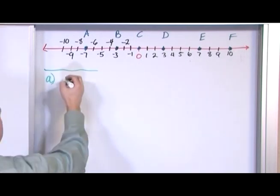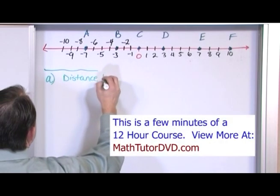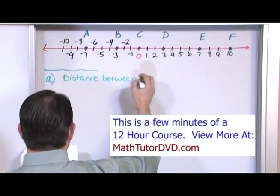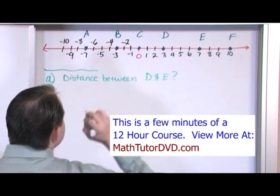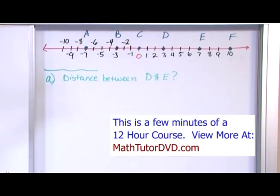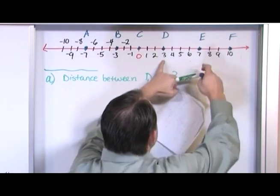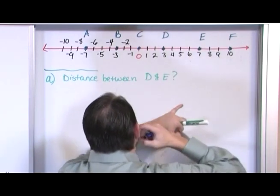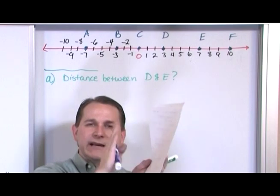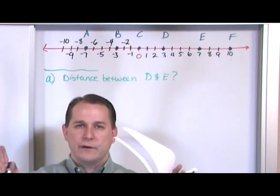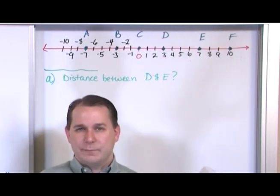And the first one is going to be, what is the distance between D and E? The points D and E. So anytime you're given that, you need to locate the points, obviously. D is here and E is here. And the distance between them basically is you're only counting the number of units between those two points. That is the distance between them.